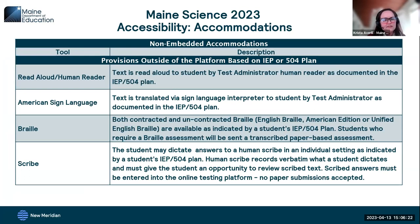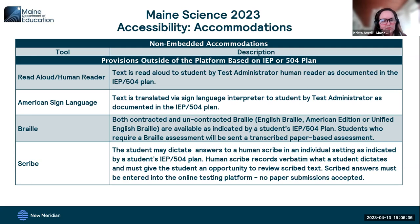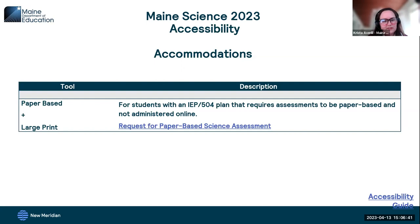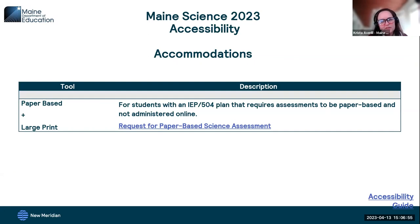Lastly, we have accommodations, which are provided only to students who have that accommodation identified in their IEP or 504 plan. That includes Read Aloud or Human Reader, American Sign Language, Braille, and Scribe — as well as paper-based and large print forms. The request for a paper-based science assessment is on the Maine Science Support page, reserved for students whose IEP or 504 plan specifies that assessments are not to be administered online. With that, I'm handing it over to Bob.